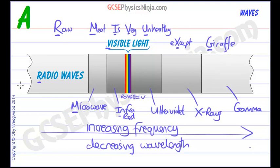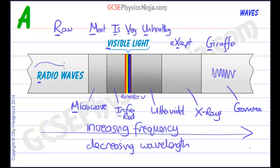So here is the electromagnetic spectrum. You can remember it by reciting 'raw meat is very unhealthy except giraffe,' which gives you the electromagnetic spectrum in increasing frequency and decreasing wavelength. Gamma waves are very, very short wavelength, whereas radio waves are very long with a very big wavelength from peak to peak.